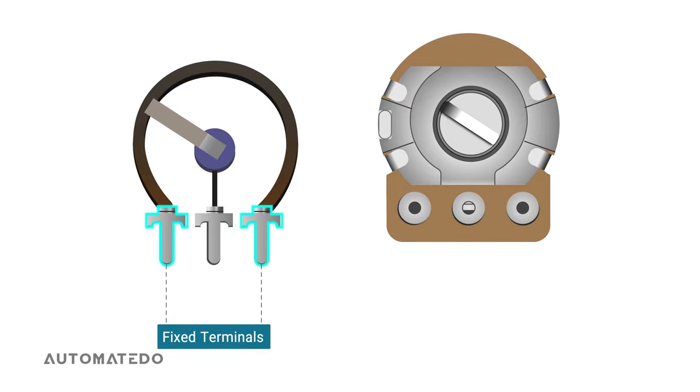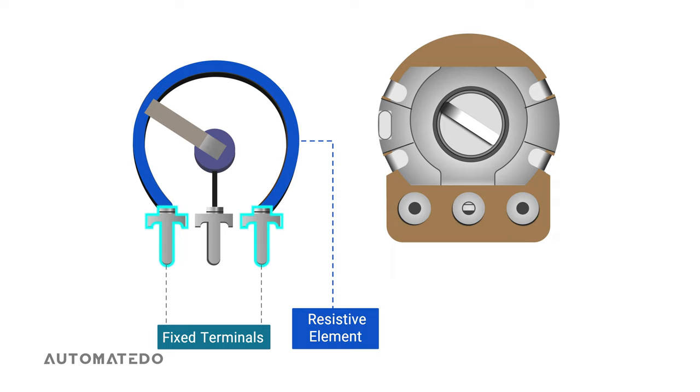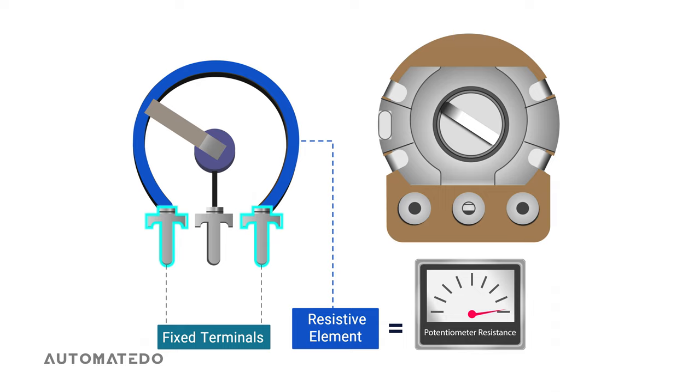The two fixed outer terminals are connected to both ends of the resistive element formed into an arc of a circle responsible for establishing an electrical resistance. You should note that the maximum resistance of a potentiometer is placed inside this semi-circular pattern.